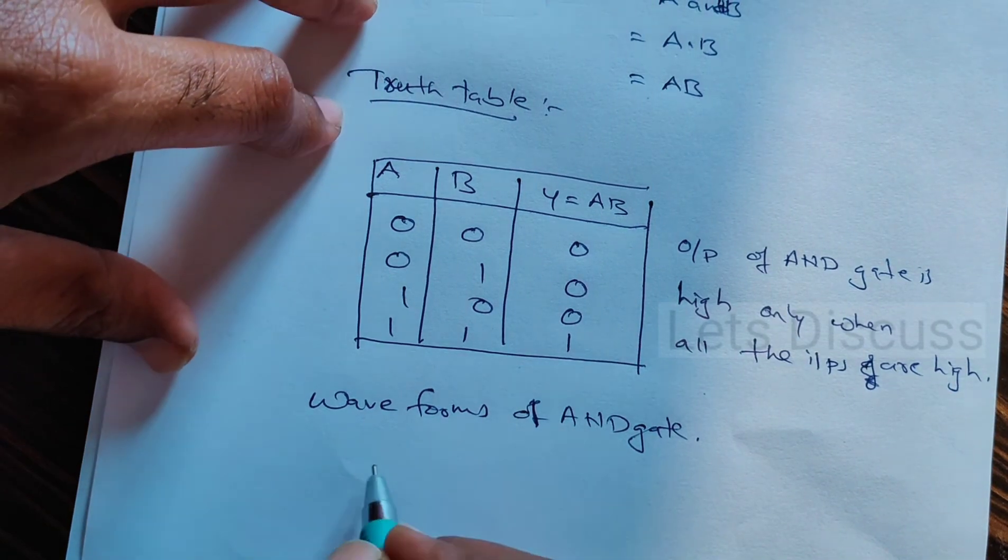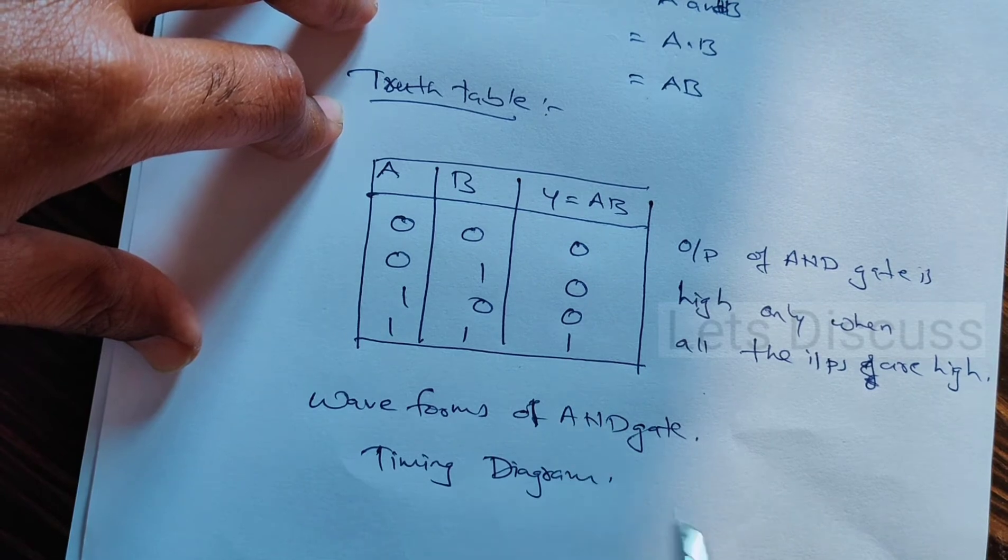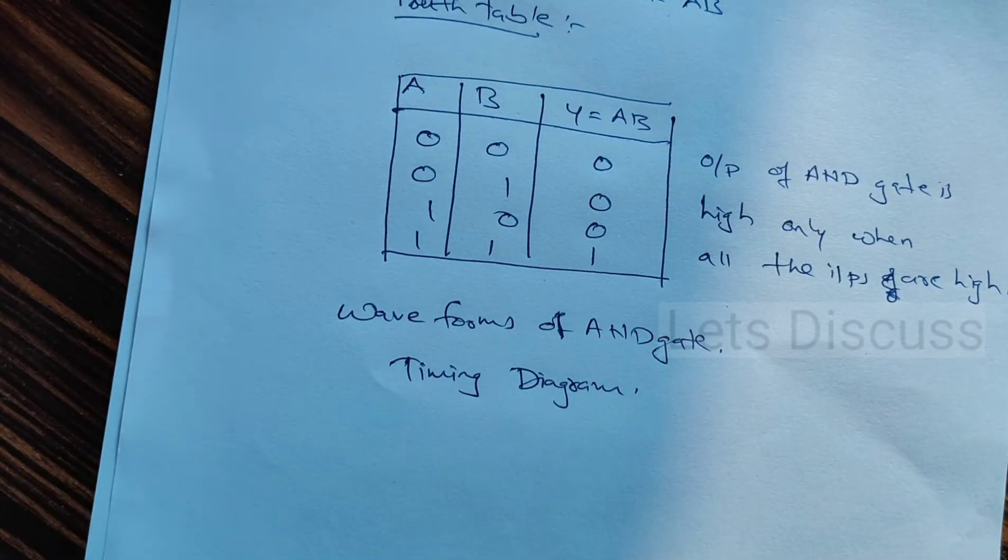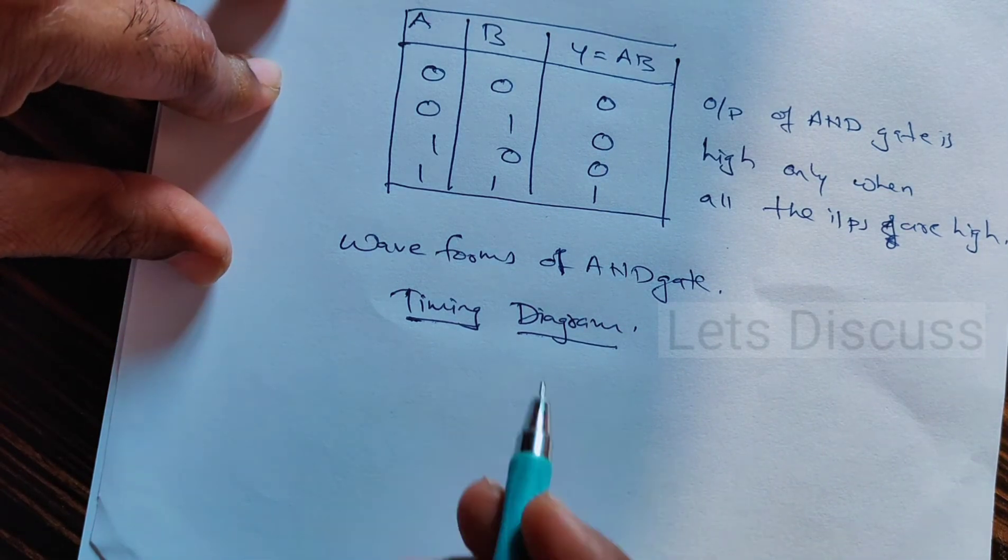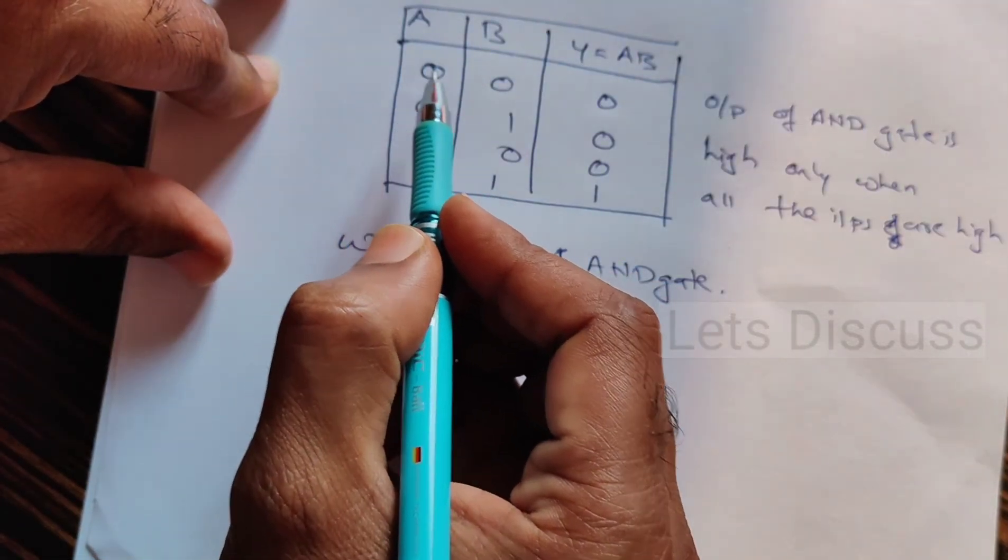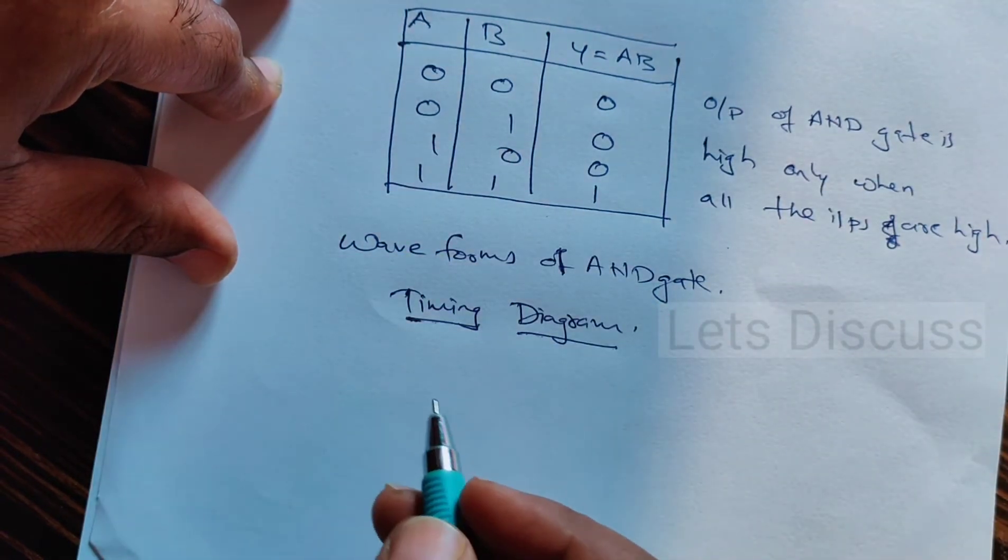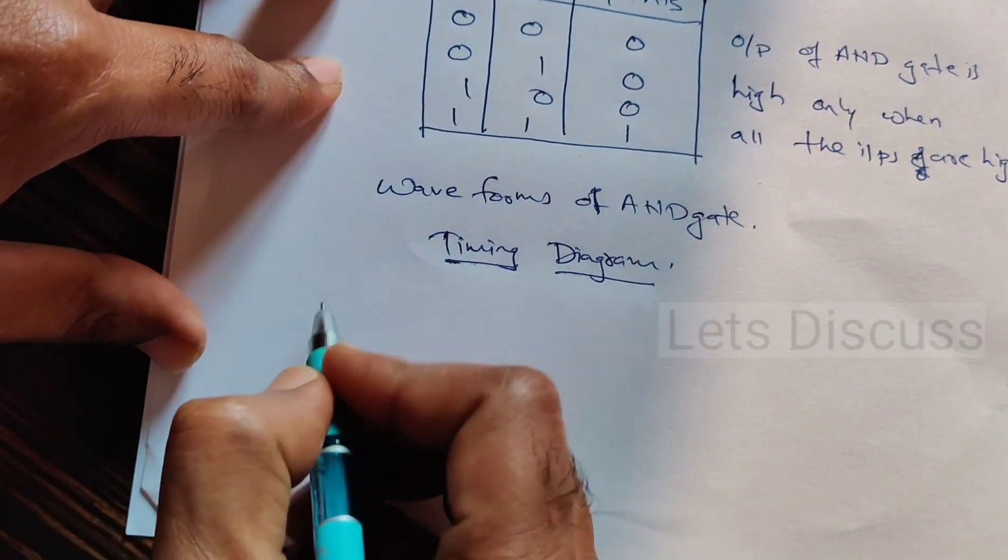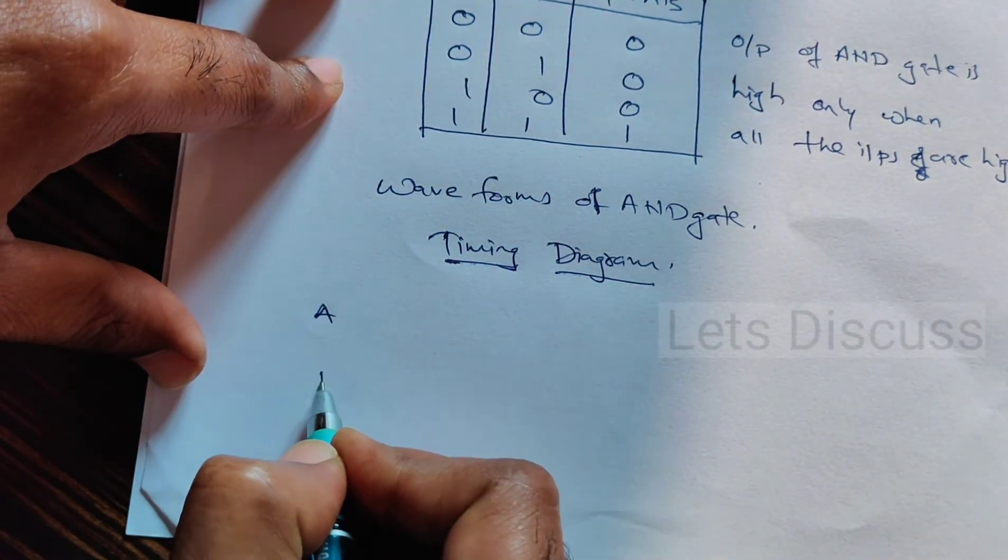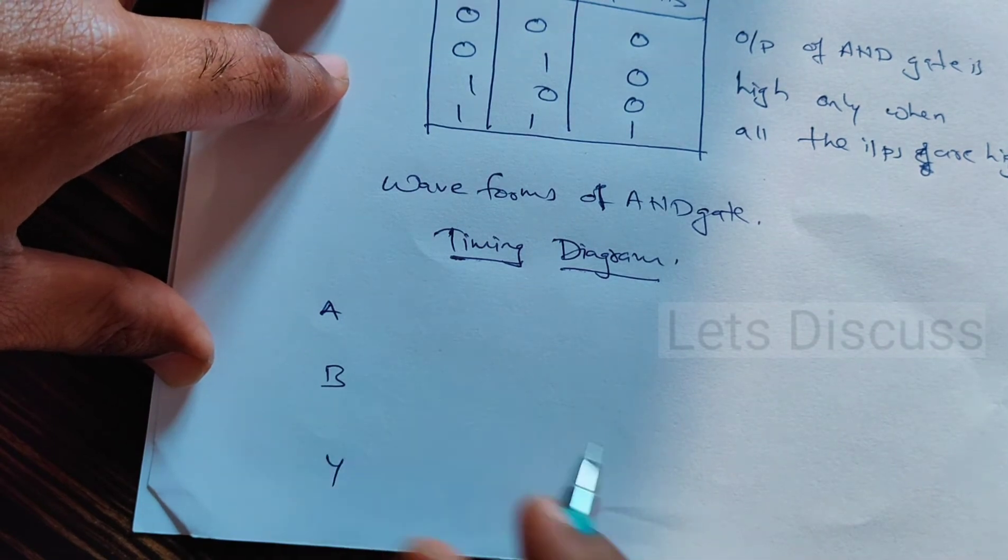It is known as a timing diagram. Timing diagram means the relationship between the input and output at regular intervals of time. Let us say the inputs are A, B, and the output is Y.